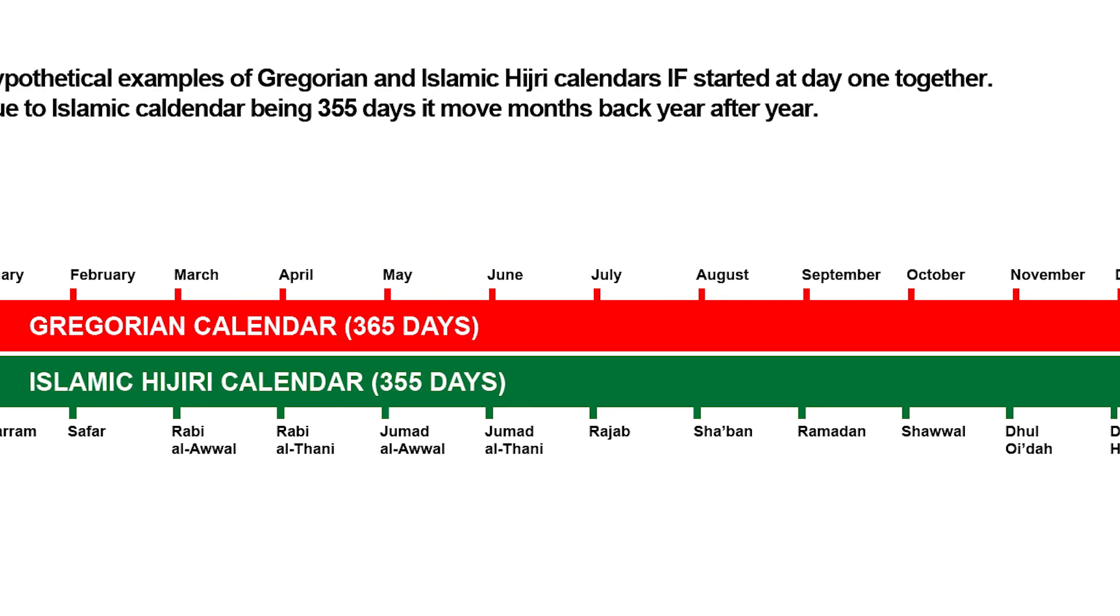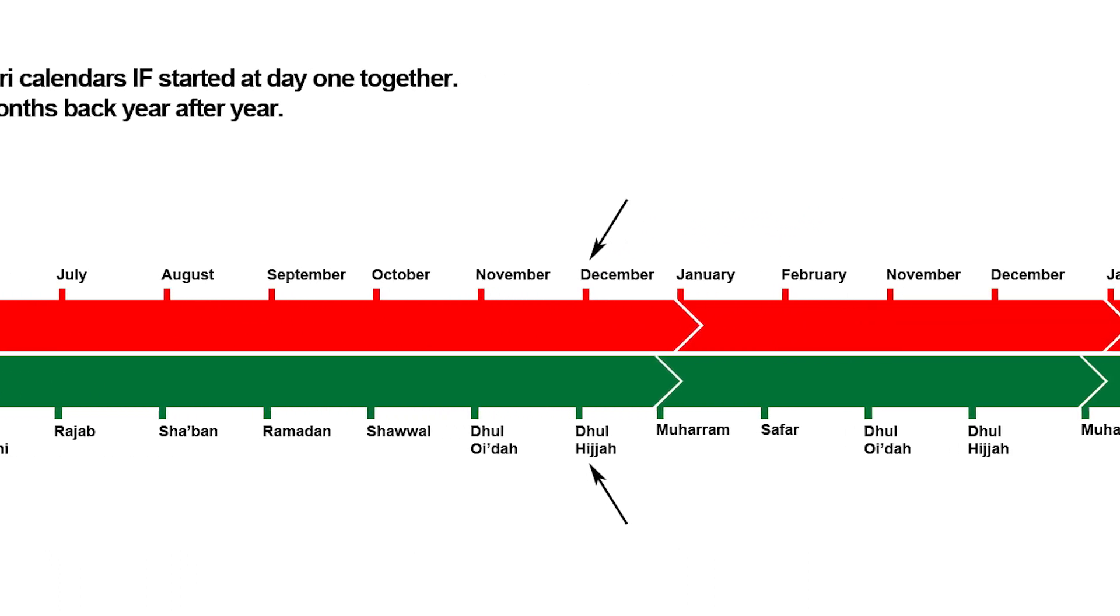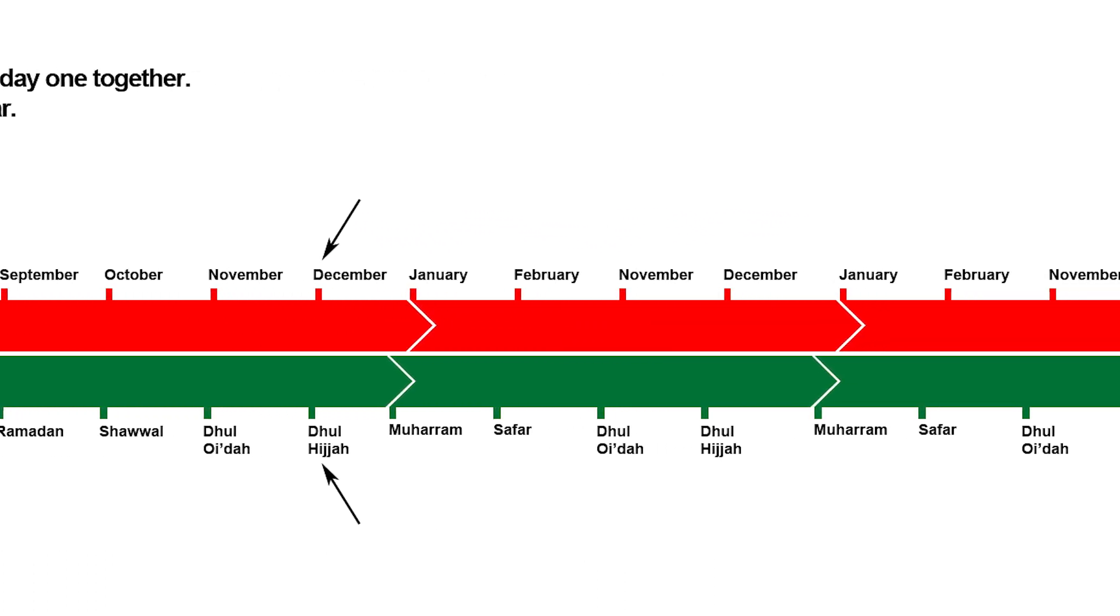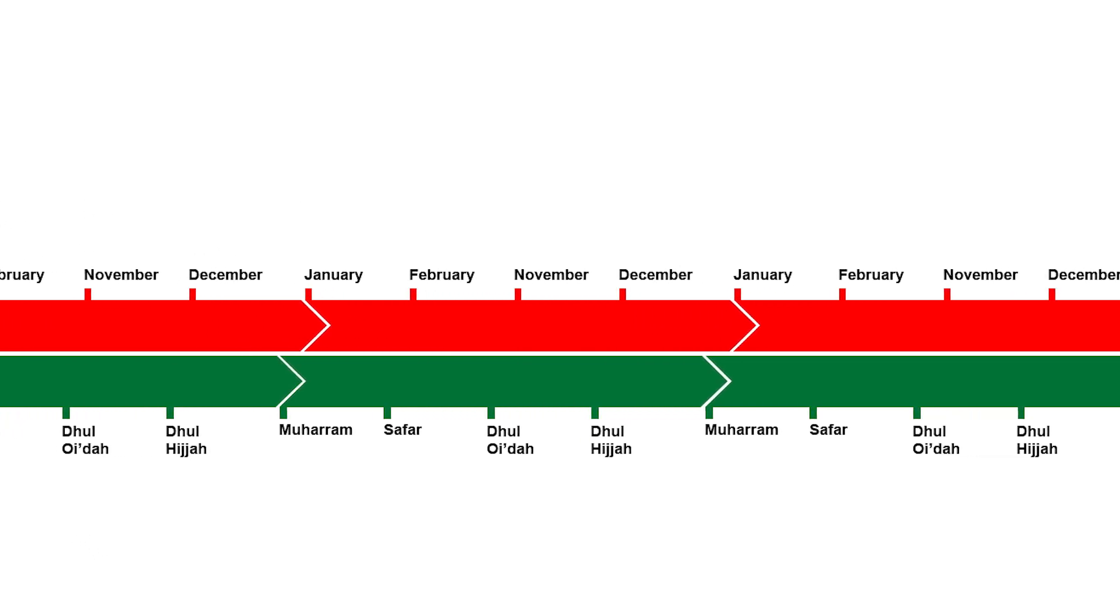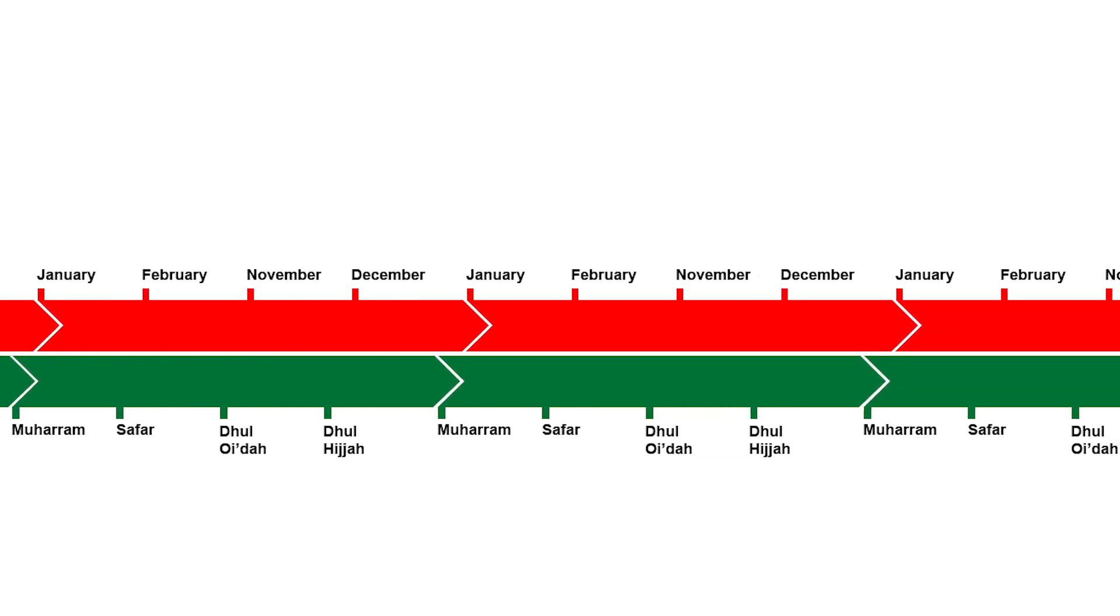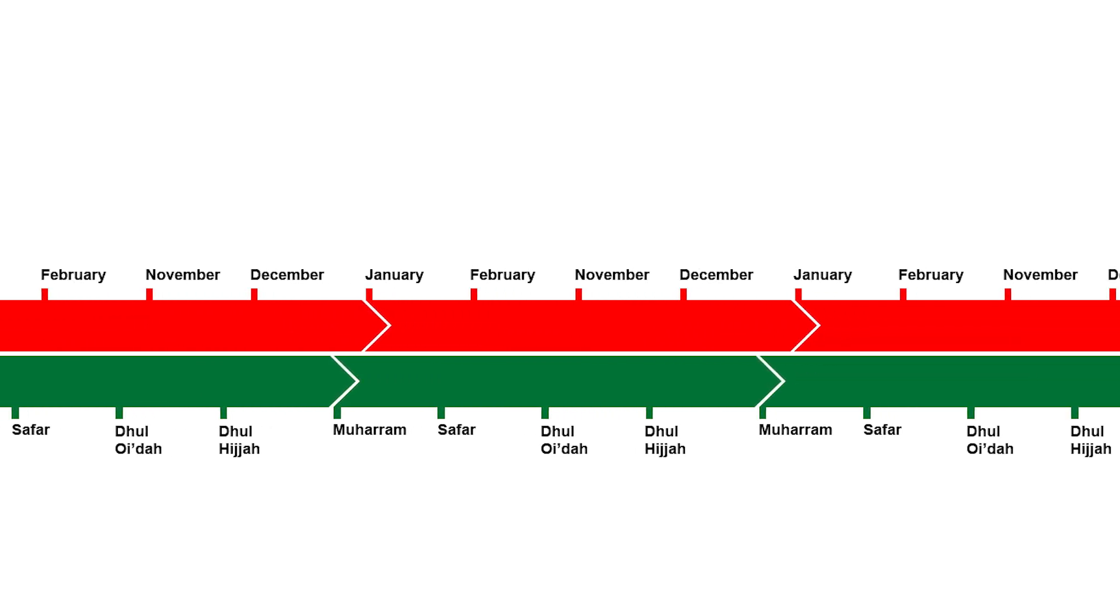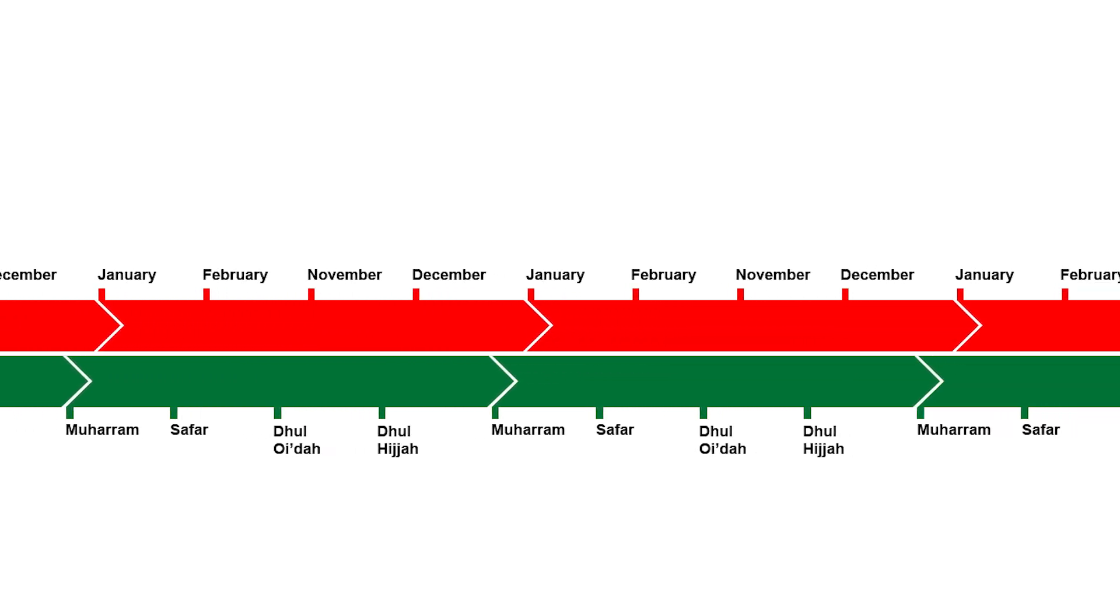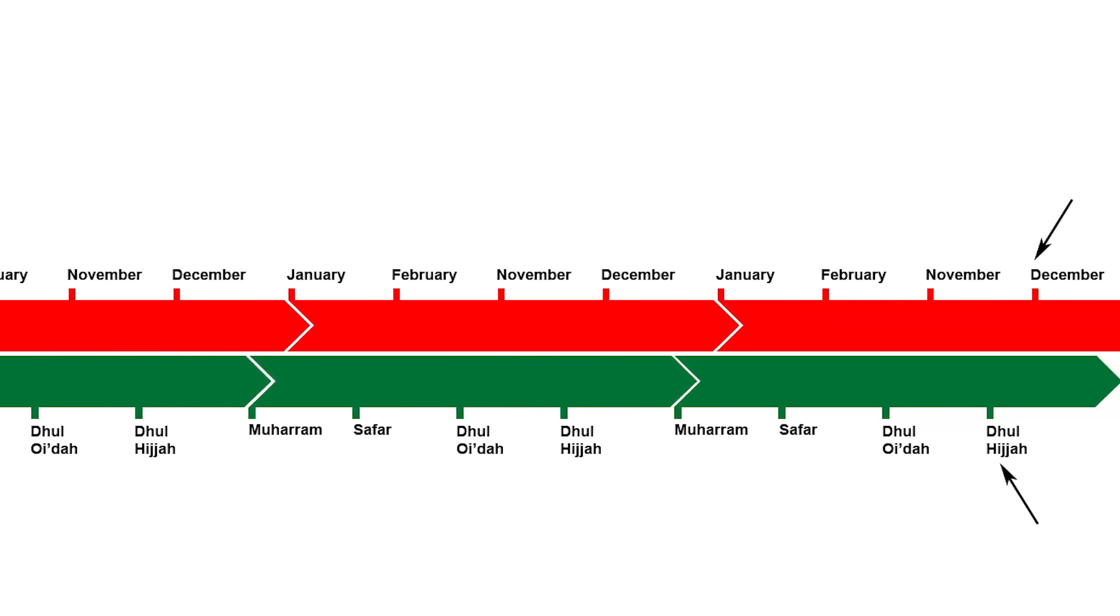Now, pay close attention. Islamic calendars technically have 354 or 355 days in a year. However, a year has 365 days. Hence, the reason why Ramadan comes short 10 days every year relative to today's commonly used Gregorian calendar. Wait, but the year has 365 days. What happened to the remaining 10 days?